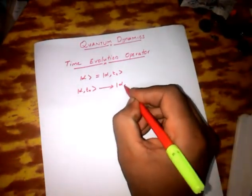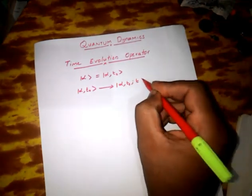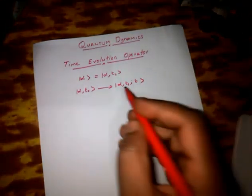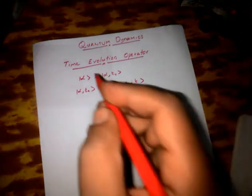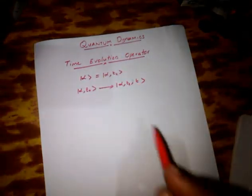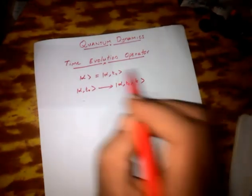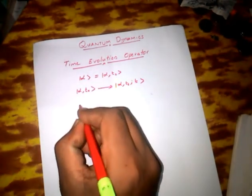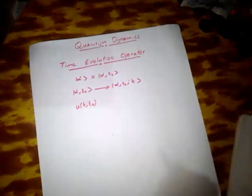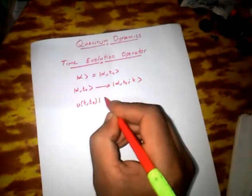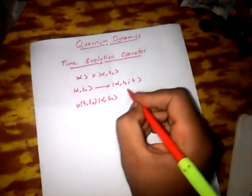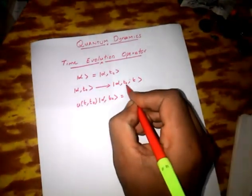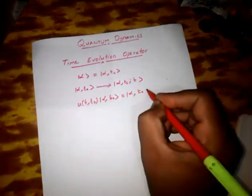After a time t, this state ket will change to ket alpha, t-naught, t. This change has happened during time t. We consider that this change happened because of an operator — the time evolution operator — represented as U(t, t-naught). This operator operating on alpha t-naught changes this state into another state alpha t-naught, t.